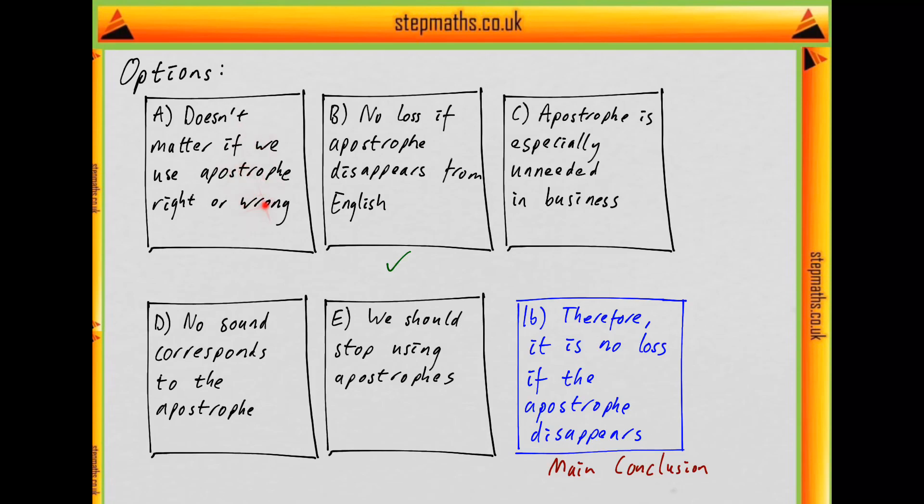A says it doesn't matter if we use the apostrophe right or wrong. This corresponds to other sentences in the argument rather than the main conclusion, so it's not the answer. C says it's especially unneeded in business. That corresponds to one of the facts that was used, but not the main conclusion. D says there's no sound corresponding to the apostrophe. That's the same as for C. E says we should stop using apostrophes. This isn't something the writer explicitly says. They just say it wouldn't matter if we stopped. This is stronger than what they're saying, so this also isn't the conclusion. That means the answer here is B.